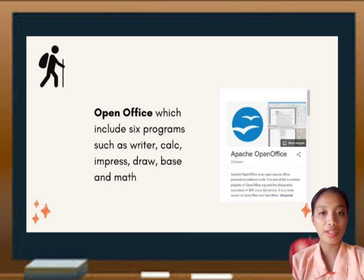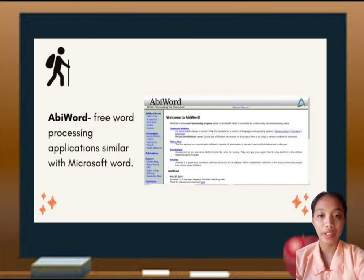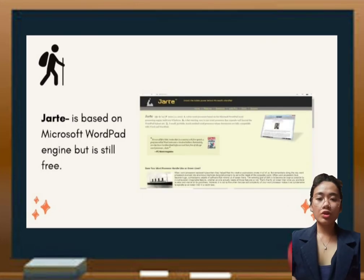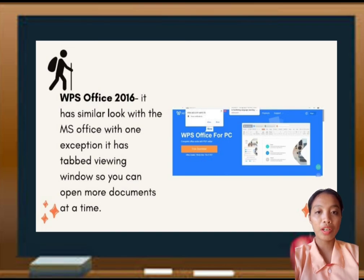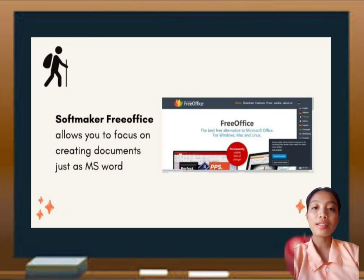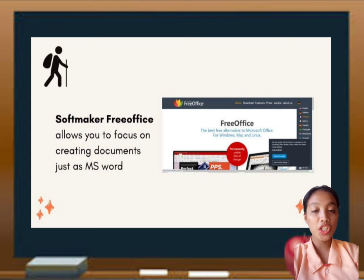The sixth is OpenOffice, which includes six programs: Writer, Calculator, Impress, Draw, Base, and Math. The eighth is Abbey Word, a free word processing application similar to Microsoft Word. Jarte is based on the Microsoft WordPad engine but is still free. Next is WPS Office 2016, which has a similar look to Microsoft Office with one exception — it has a tabbed viewing window so you can open more documents at a time. The last one is Softmaker Free Office, which allows you to focus on creating documents just as Microsoft Word.